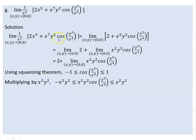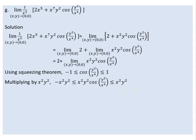We need to find the limit by bounding the expression. Since cosine lies between -1 and 1, the expression x²y² cosine(y²/x⁴) is squeezed between -x²y² and +x²y². We take the limit of both bounding expressions.